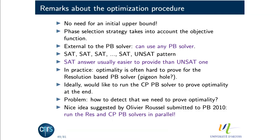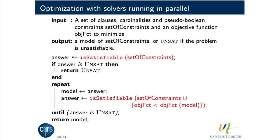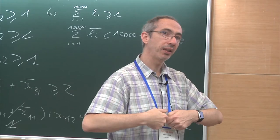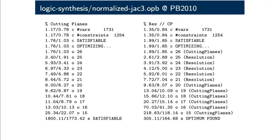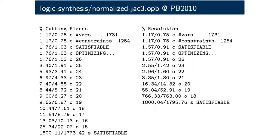Olivier Roussel suggested: run them in parallel. Since 2010, SAT4J has had a solver called BOSS that runs two solvers in parallel. When a satisfiable answer is found, you stop both solvers and take the solution from whichever answered first. Here's a particular problem from the PB 2010 evaluation: the resolution solver finds values 26, 23, 22, 21, 20, 19, 18 after one second but cannot prove optimality. The cutting plane solver reaches 15 after 25 seconds but also cannot prove optimality.